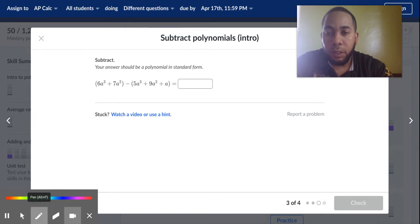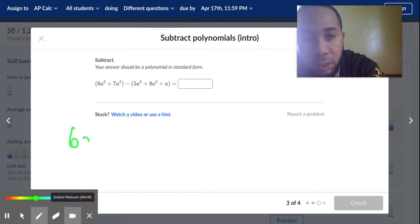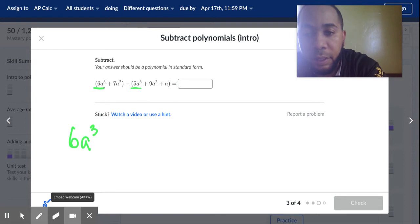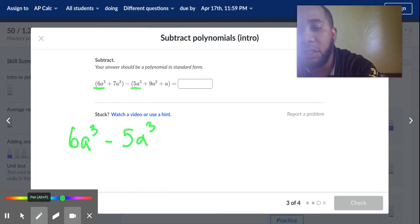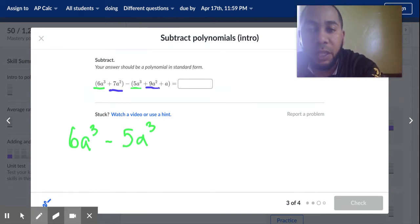Okay, again let's just identify our like terms. We got 6a to the third, and I also have this negative 5a to the third. Now remember, that negative sign - this is where this can get tricky - that negative sign in there changes everything in the second parentheses to the opposite sign.